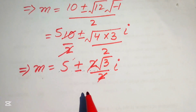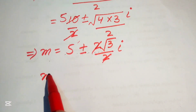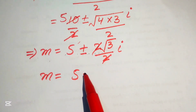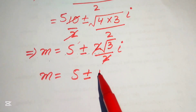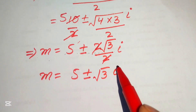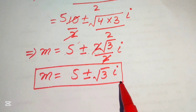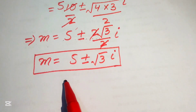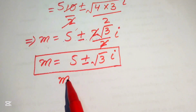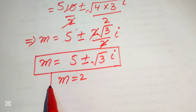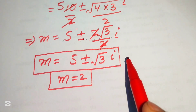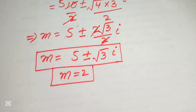The two complex roots are M = 5 + √3·i and M = 5 - √3·i. Combined with the real root M = 2 found earlier, these are the three total roots of the given equation. Thank you so much for watching this video — please subscribe to my channel for more exciting videos.